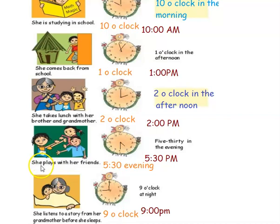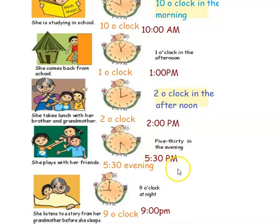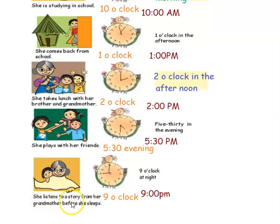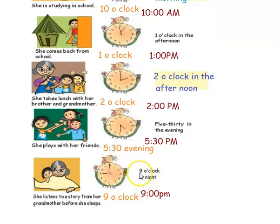The next activity is she plays with her friends. The given time is 5:30 in the evening. Since it is 5:30, the hour hand should be at 5 and the minute hand should be at 6, because 6 represents 30 minutes. Since it is evening, we write it as 5:30 p.m. The next activity is she listens to a story from her grandmother before she sleeps at 9 o'clock at night. The hour hand should be at 9 and the minute hand at 12, representing 9 o'clock — 9 p.m.